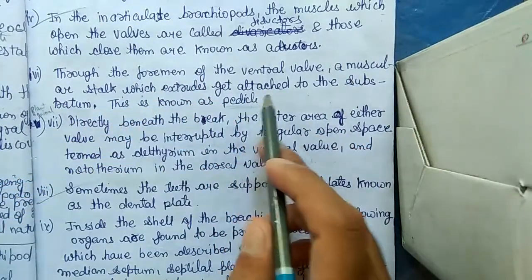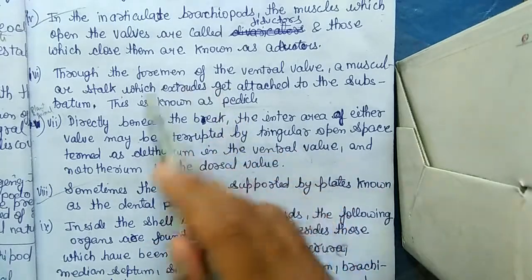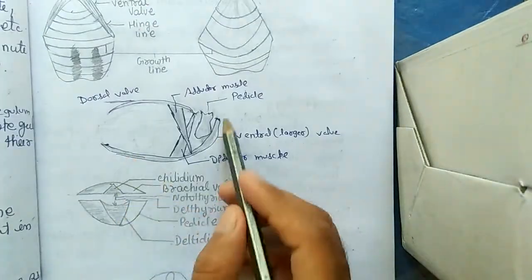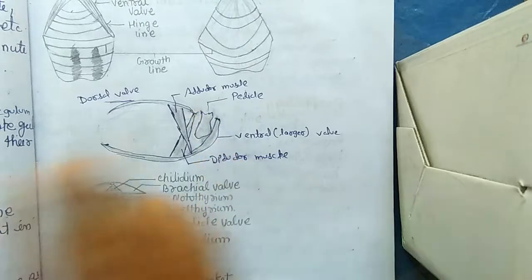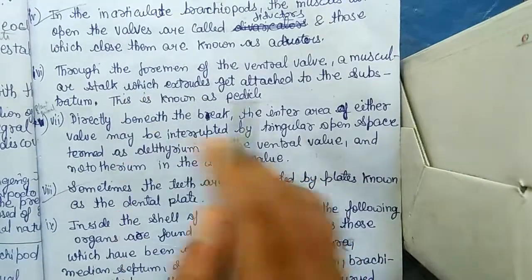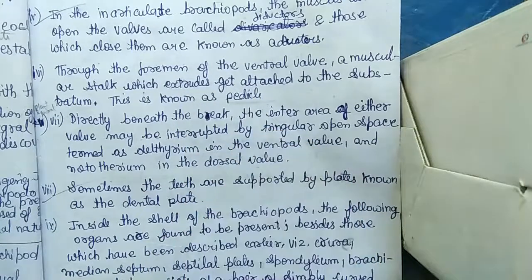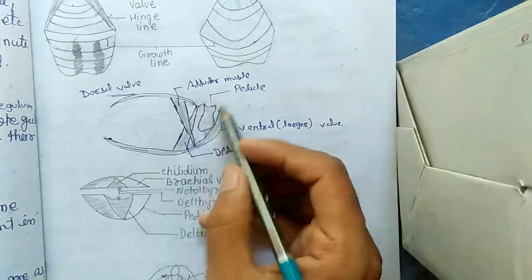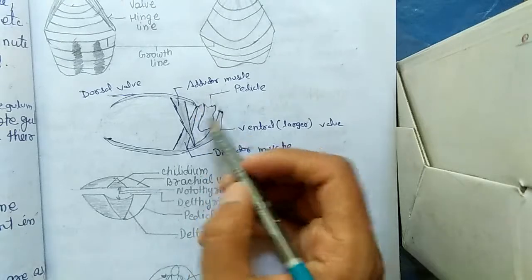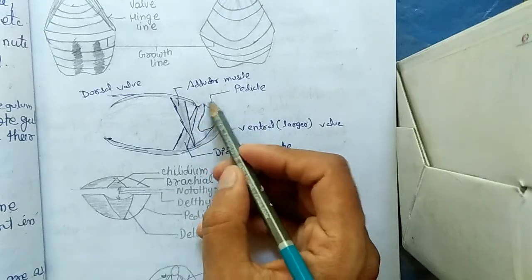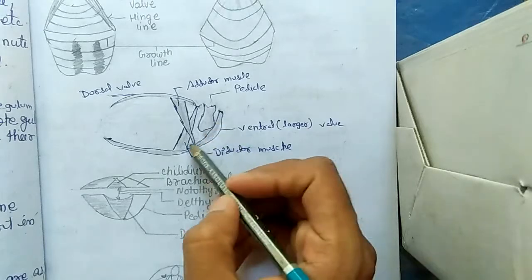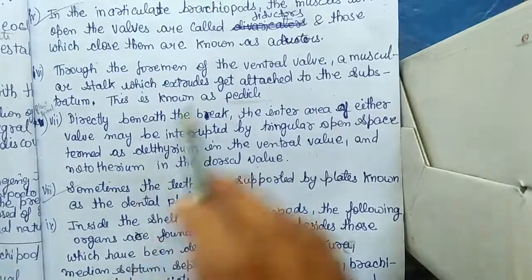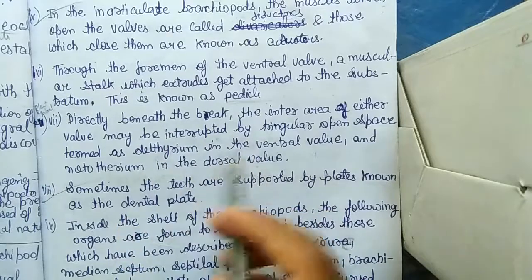Through the foramen of the ventral valve, a muscular stalk extrudes and gets attached to the substratum. This is known as the pedicle. The pedicle is a muscular piece that comes out through the gap and connects the animal to the sub-layer.